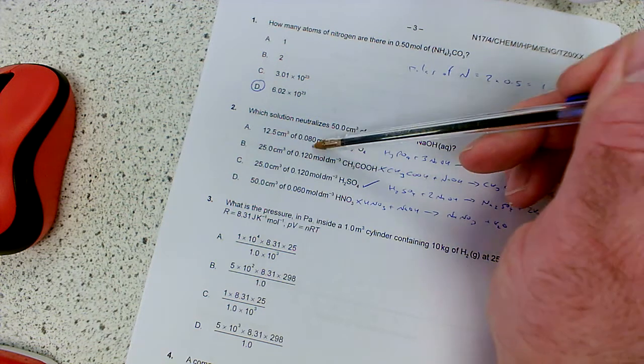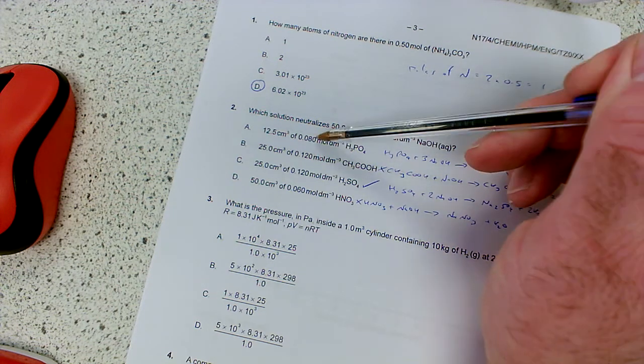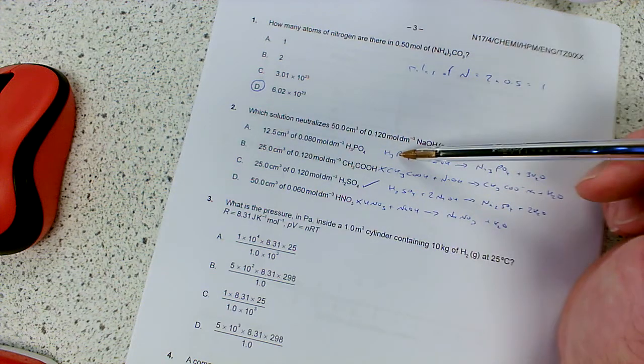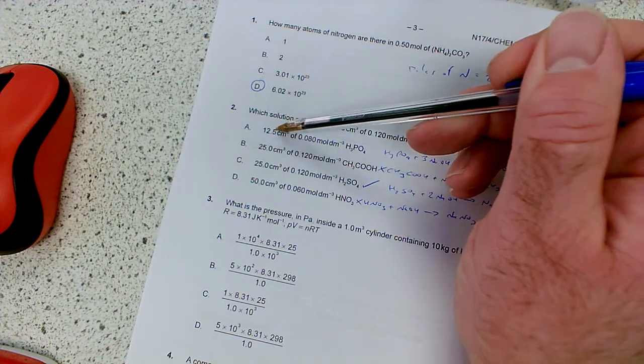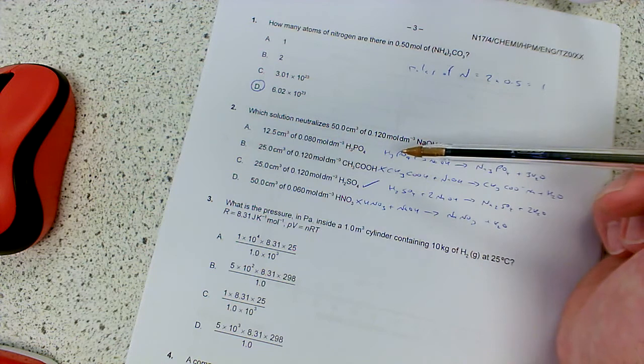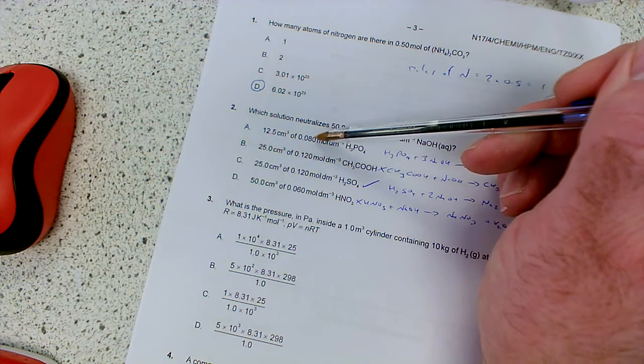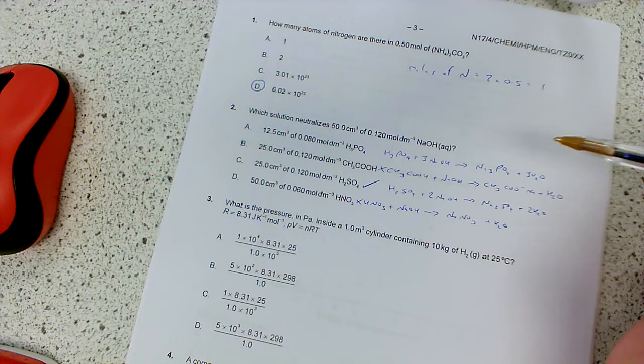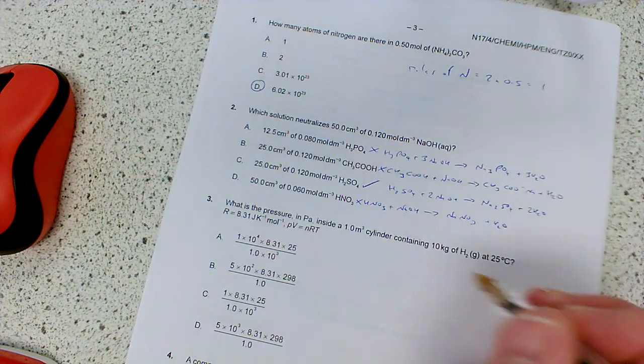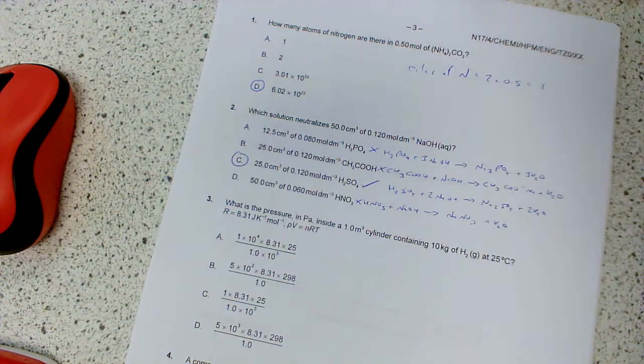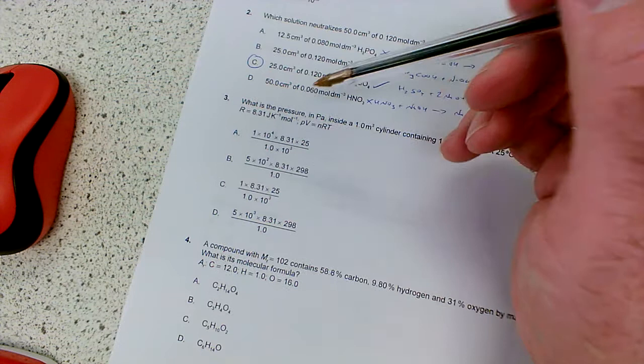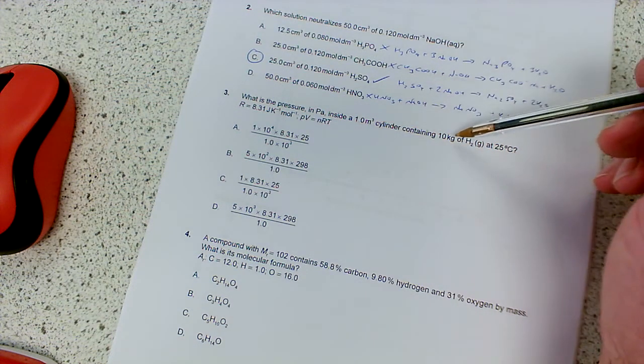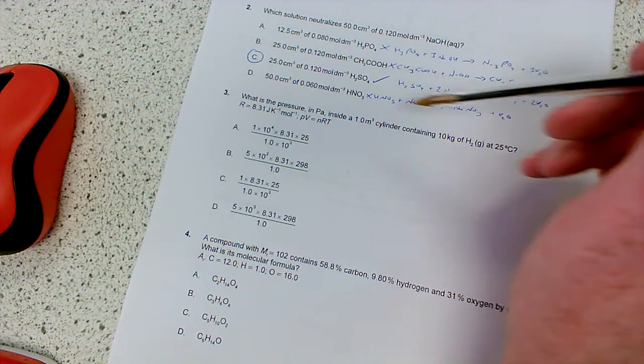Now if the concentration was the same, if it was 0.12, I've still only got a quarter, and a quarter wouldn't quite cut it, because I would need at least one third of the volume if I had the same concentration. So even if I had 0.12, I don't have enough volume to neutralize all the sodium hydroxide. So it's not this one based on that. I'm going to go with C. Next one down beneath then, what is the pressure in PA Pascals inside a 1 m3 cylinder containing 10 kg of hydrogen at 25 degrees C?